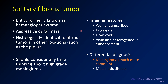These are dural masses that tend to be aggressive. They look a lot like meningiomas, and the classic teaching was that they are in the same family as meningiomas. But if you look at the genetics, they're not related to meningiomas — they're instead related to fibrous tumors in other locations, such as pleural tumors. If you see a lesion that looks extra-axial and aggressive and you're thinking about a high-grade meningioma, solitary fibrous tumor is probably on your differential.